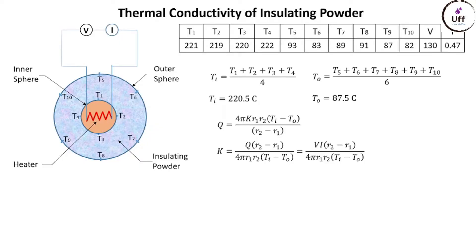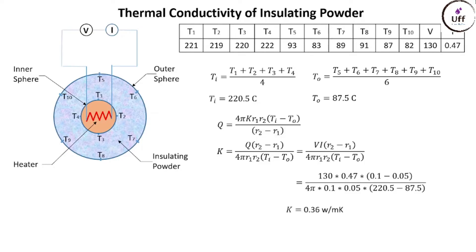We rearrange the formula to solve for k, since thermal conductivity of insulating powder is the unknown. Substituting all values, the thermal conductivity of insulating powder is 0.36 watts per meter kelvin.